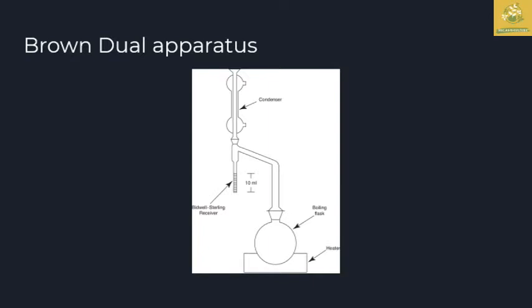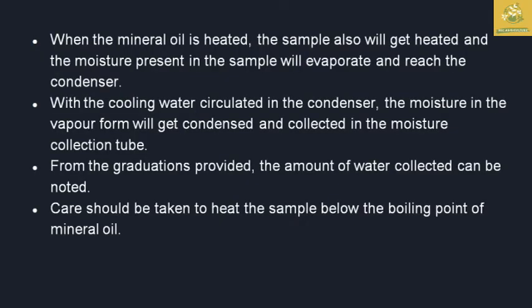Cooling water is circulated through the condenser in the Browne-Duval apparatus as well. When the mineral oil is heated, the sample is also heated and the moisture present in the sample evaporates, reaches the condenser, and the vapor condenses and is collected in the moisture collecting tube. The amount of water collected is noted from the graduation points, and that is how the boiling point of mineral oil enables moisture measurement in this apparatus.